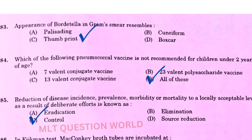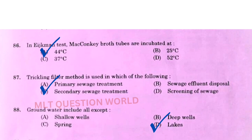Next question: Reduction of disease incidence, prevalence, morbidity or mortality to a locally acceptable level as a result of deliberate efforts is known as — the right answer is option C. Next one: In the Eijkman confirmatory test, MacConkey broth tubes are incubated at — the right answer is option A, 44 degrees Celsius.